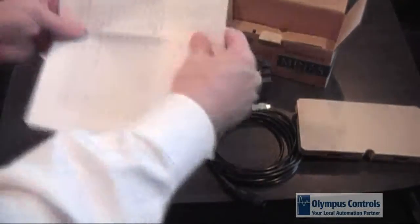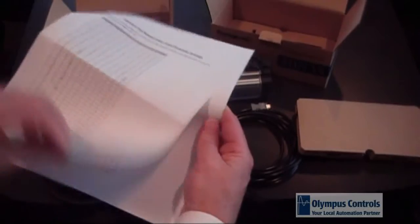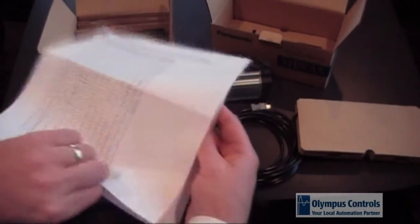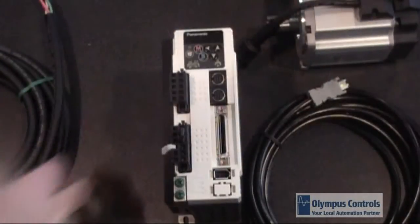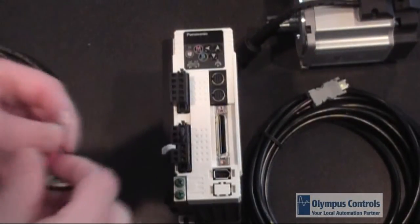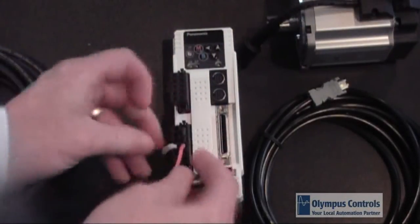Each servo amplifier will come with documentation to show exactly how to configure your amplifier and wire into your machine. We will cover that next. The first step is to wire your motor into the drive. A small tool is provided on the connector. You simply push it and plug the wire in.